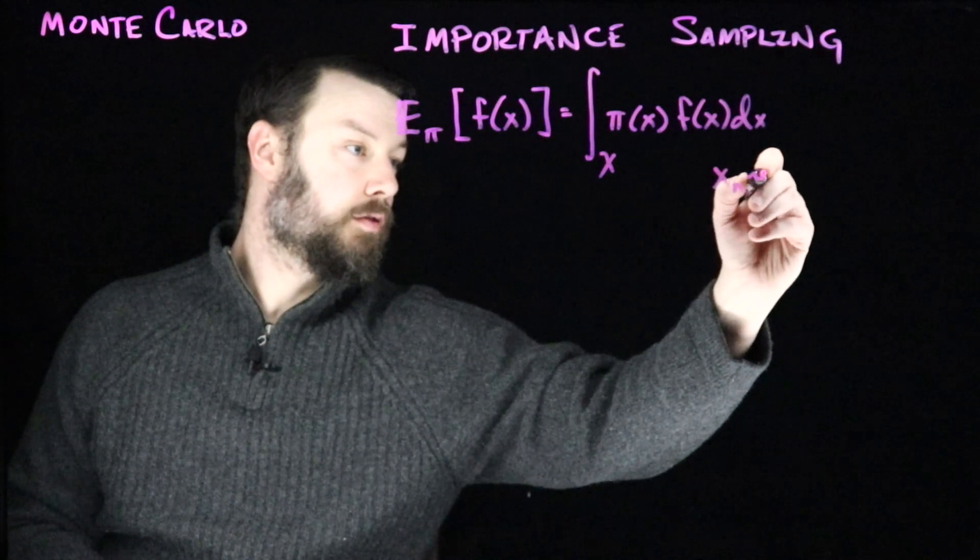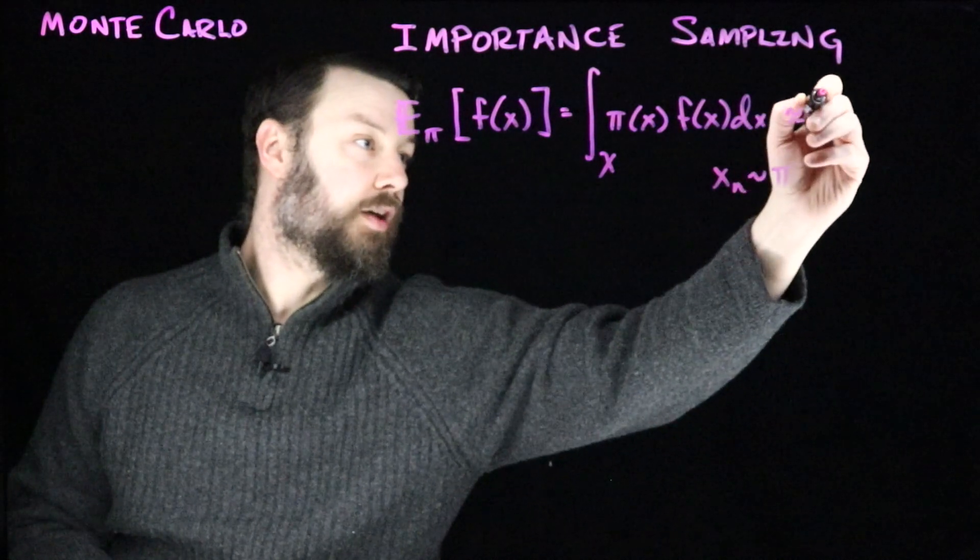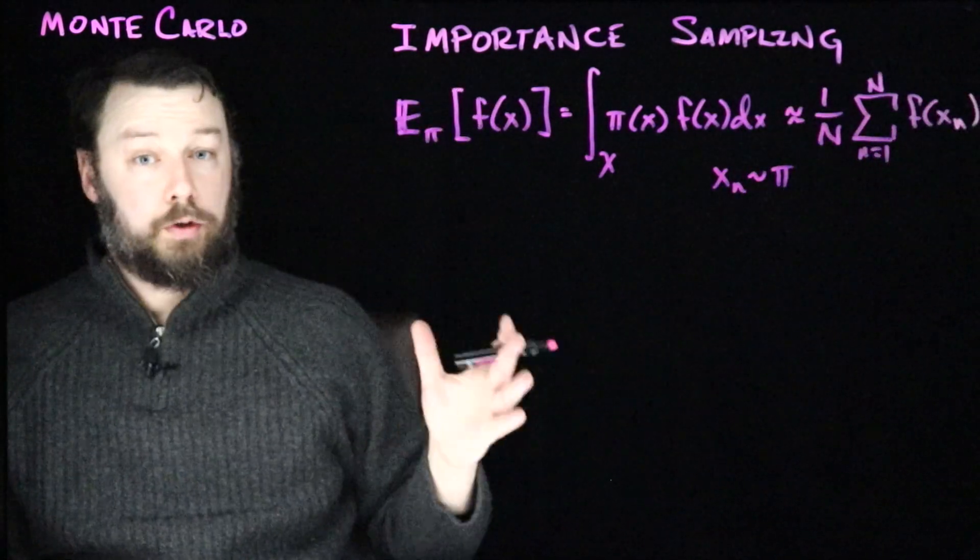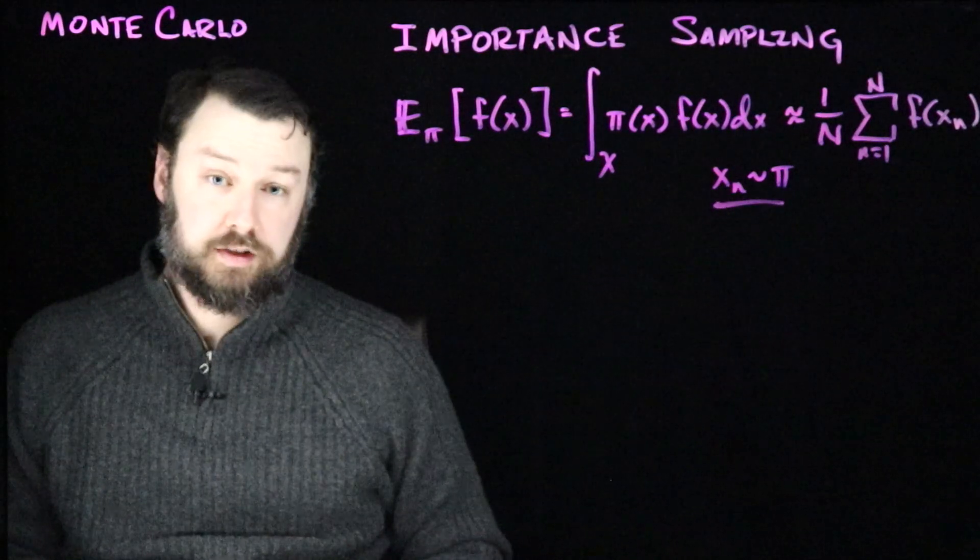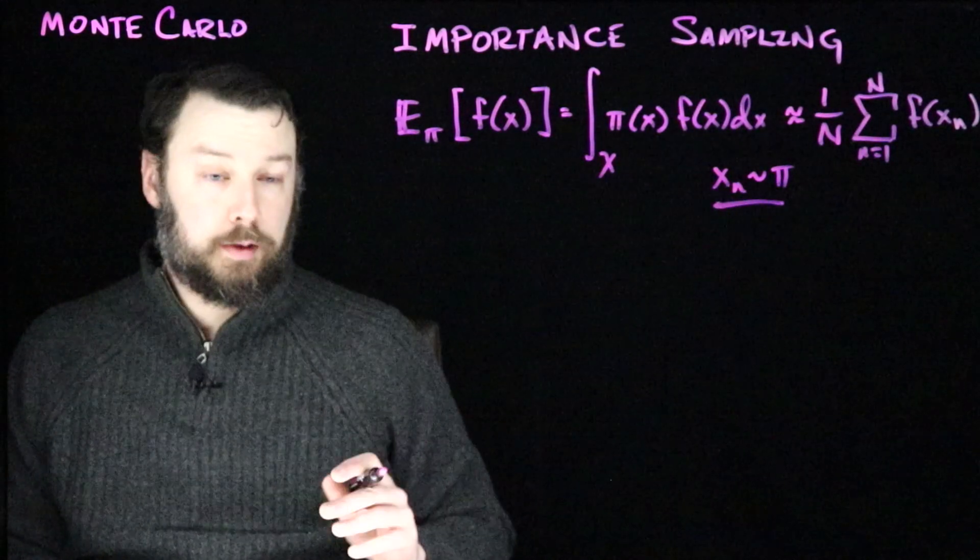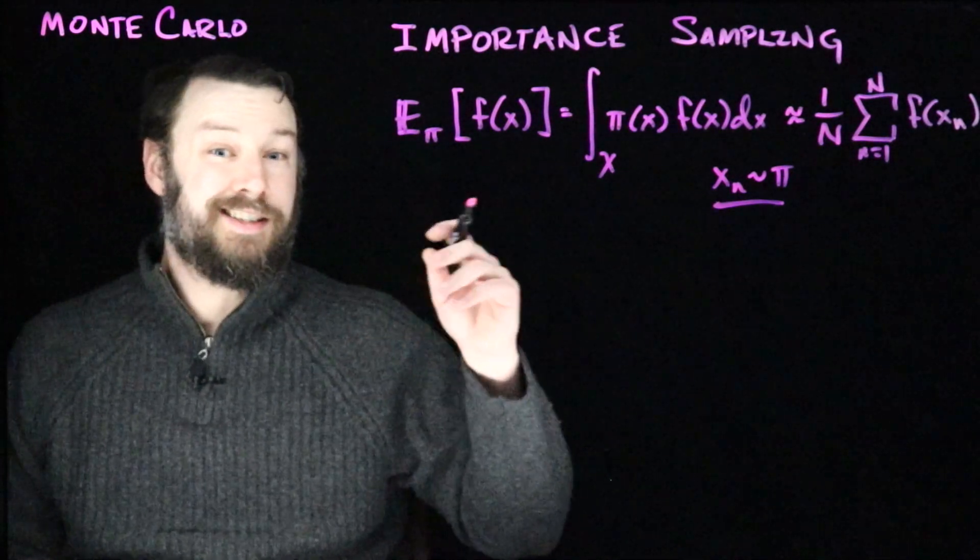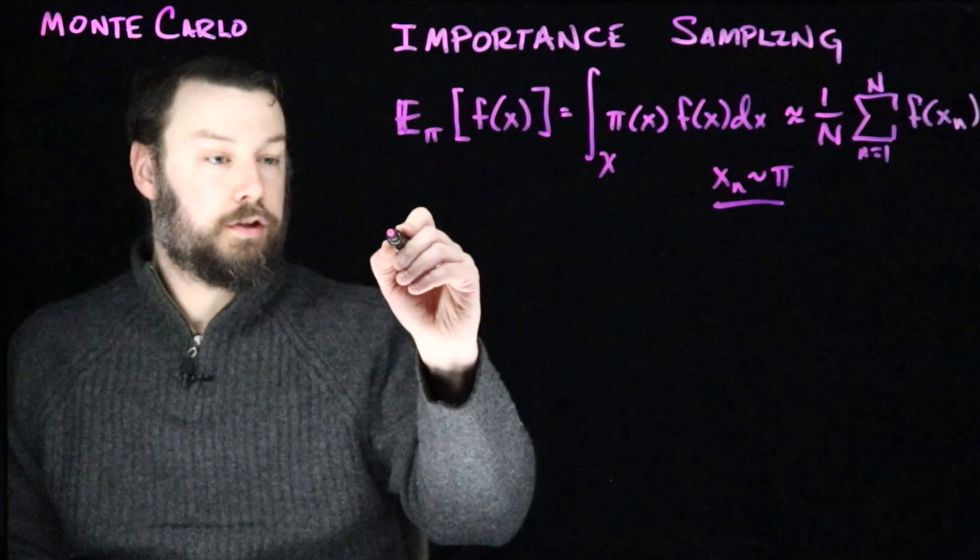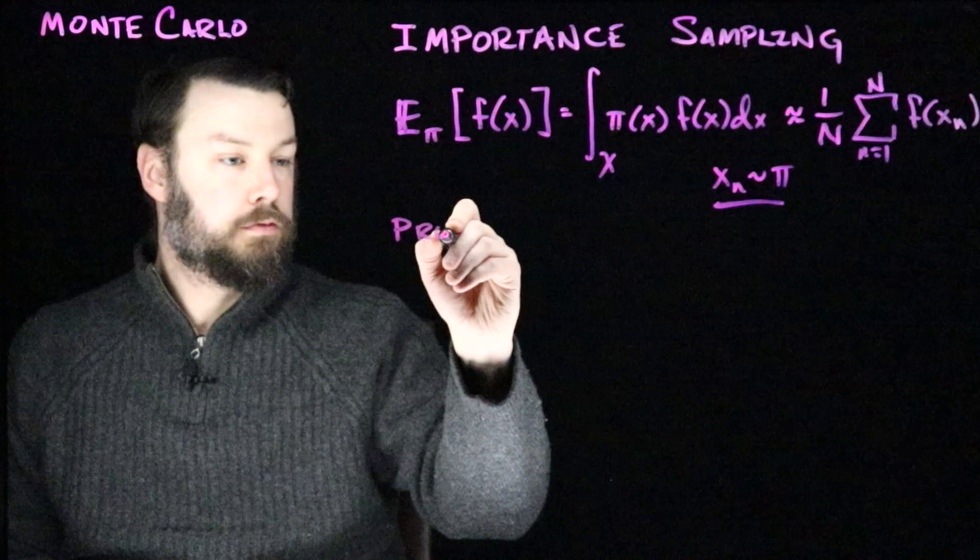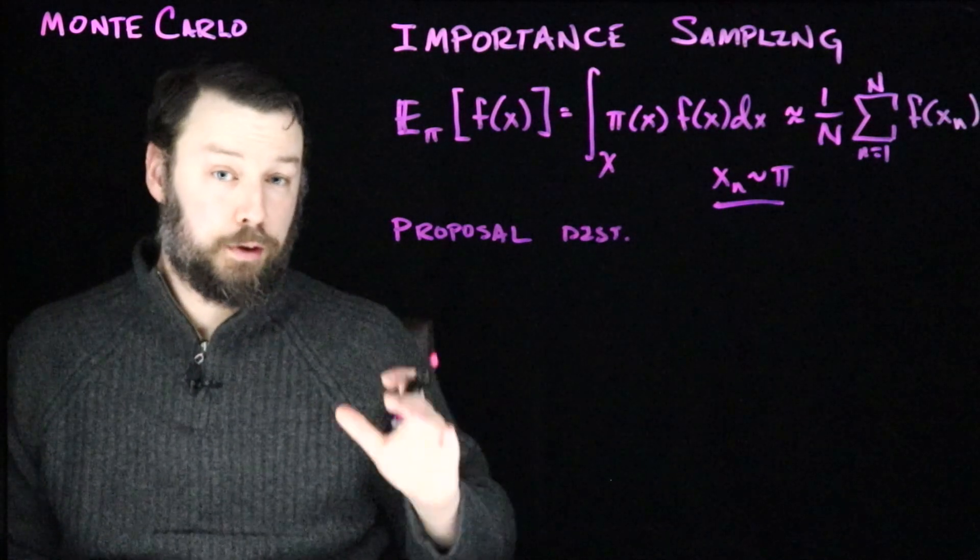So pi is a distribution on x and we're looking at the expectation of this function. So if this is continuous, then we would write something like this. There's some space x, we have pi, and we have f of x. Then the idea is that if we draw some samples, say n of them, from the distribution pi, then we can approximate this with an average. So this is straightforward, but it does require that we be able to generate samples from pi. The idea of importance sampling is to rewrite this integral in a different way. And in particular, we choose another distribution to introduce into this equation.